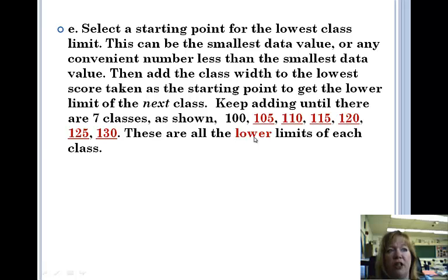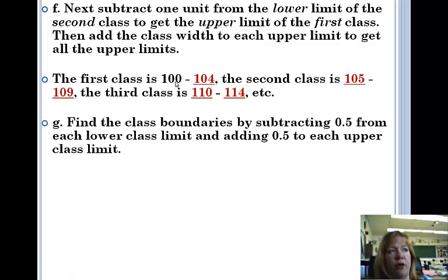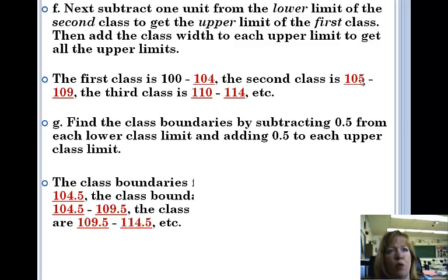These are all the lower limits of each class. And then the third class is 110 to 114. You subtract one unit from the lower limit of the second class to get the upper limit of the first class. Instead of going 100 to 105, they went 100 to 104. It's one less. 104 was one less than the 105.